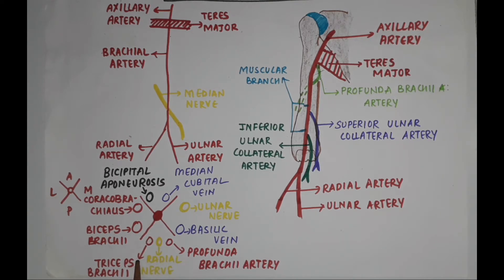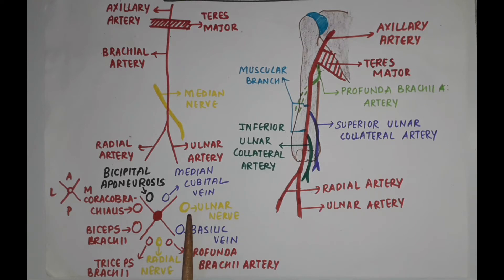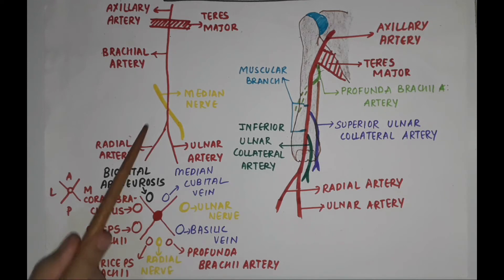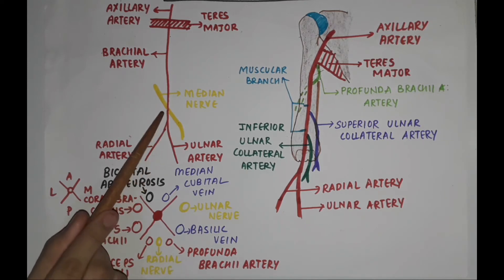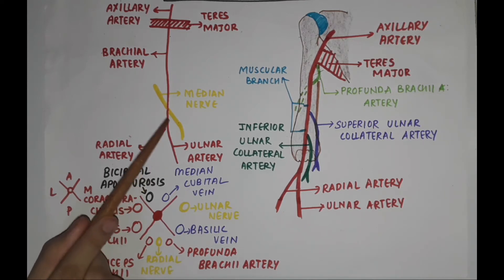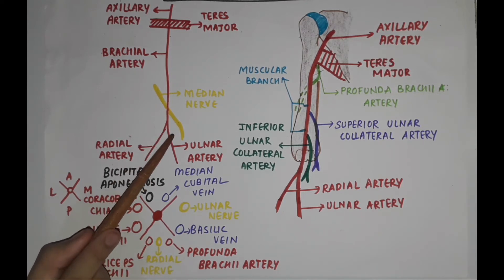Posteriorly, the brachial artery is related to the triceps brachii muscle, the radial nerve, and the profunda brachii artery. Medially, in the upper part it is related to the ulnar nerve and the basilic vein, whereas in the lower part we also have the median nerve in its medial part.